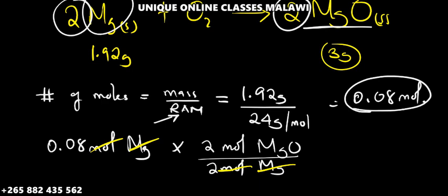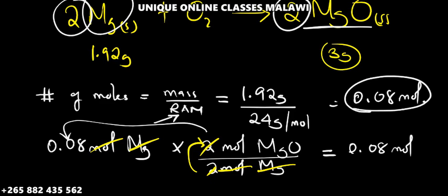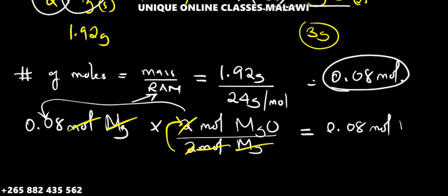Magnesium cancels, moles cancel, and we get 2 moles of magnesium oxide. The answer there will be 0.08 moles of magnesium oxide. Now we have the number of moles of magnesium oxide.